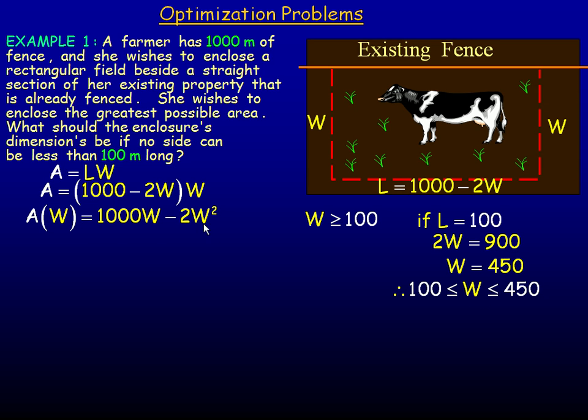So that's the interval upon which we're trying to find the maximum value of the area. So we'll find that by differentiating. The derivative of 1000W is 1000. Using the power rule, 2 times negative 2 is negative 4, so that's minus 4W. And we'll set that equal to 0. And we'll solve for W. So when we solve for W, we get 4W equals 1000. So dividing out the 4, we get W is 250 meters.